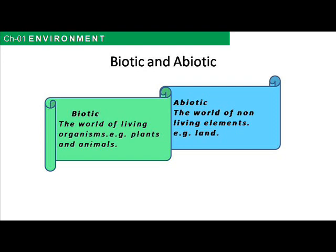Biotic and abiotic components: biotic factors are living or once-living organisms in the ecosystem. These are obtained from the biosphere and are capable of reproduction — they breathe and they grow. Examples of biotic factors include animals, birds, trees, plants and all living organisms.